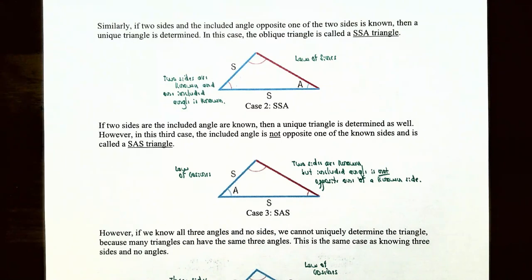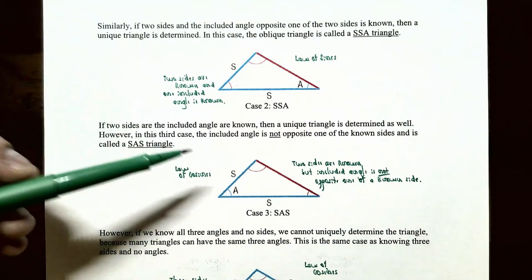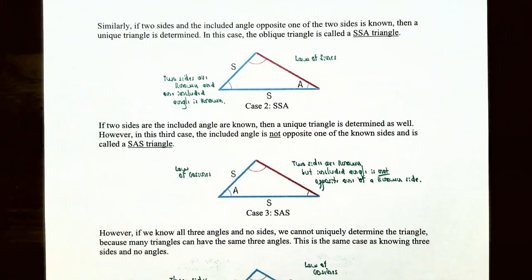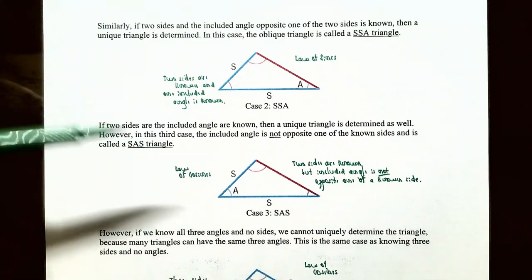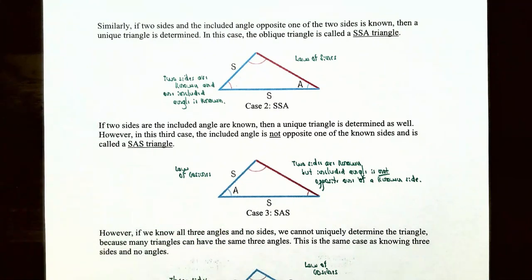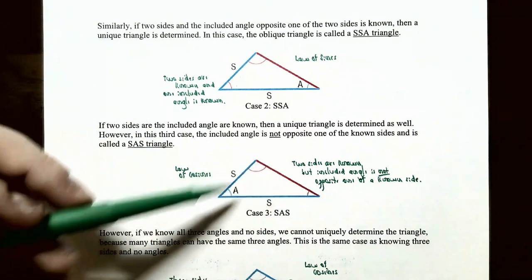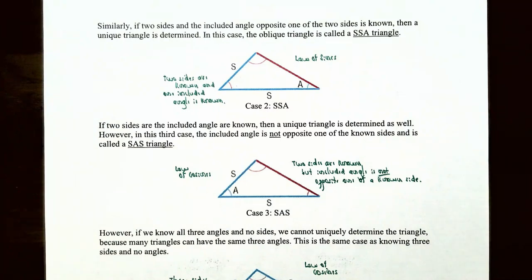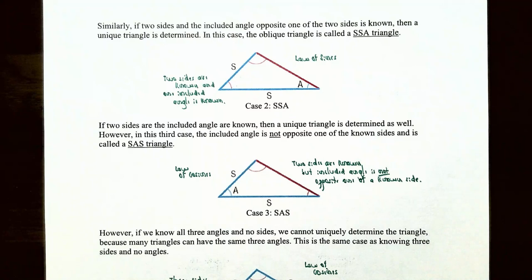If two sides and an included angle are known, a unique triangle is determined as well. However, in case three the included angle is not opposite one of the known sides — this is called a side-angle-side or SAS triangle. You have two known sides and one known angle, but the side opposite the angle is unknown. In this case we use the law of cosines, which we'll discuss in the next section.